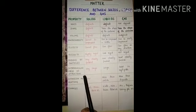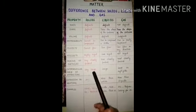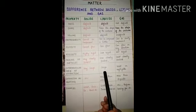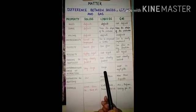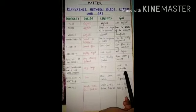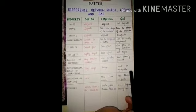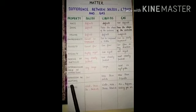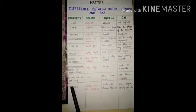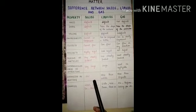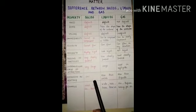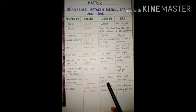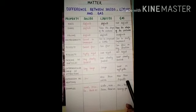Intermolecular force of attraction — the attraction between the molecules. In solids, the intermolecular force of attraction is very large. In liquids, they have a large intermolecular force of attraction, but less than solids. And in gases, they have the least or negligible force of attraction. Expansion on heating: when we heat solids, liquid and gas, they will expand. In case of solids, there is very low expansion. In liquids, expansion is more than solids. And in gases, expansion is more than liquids.